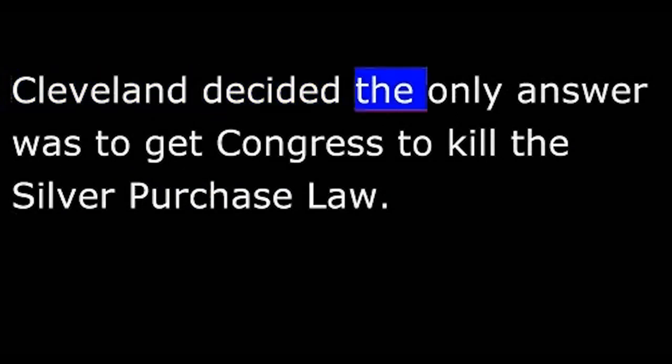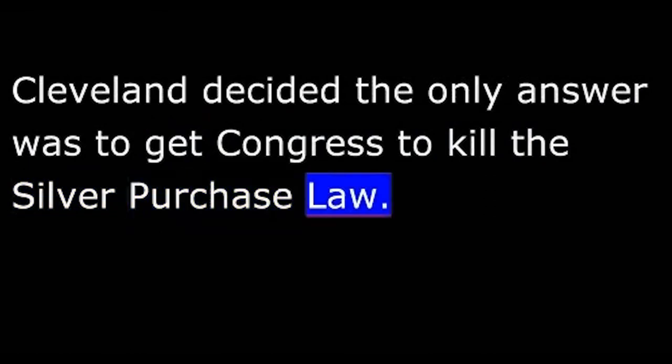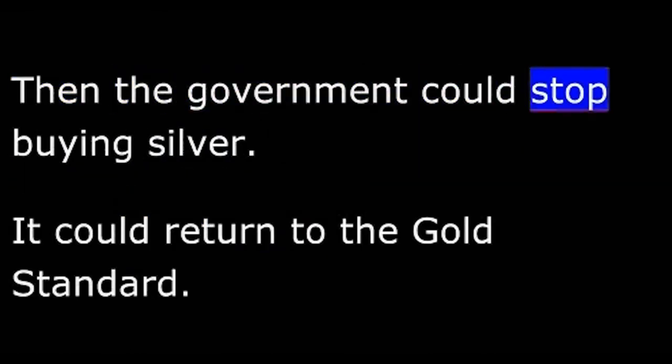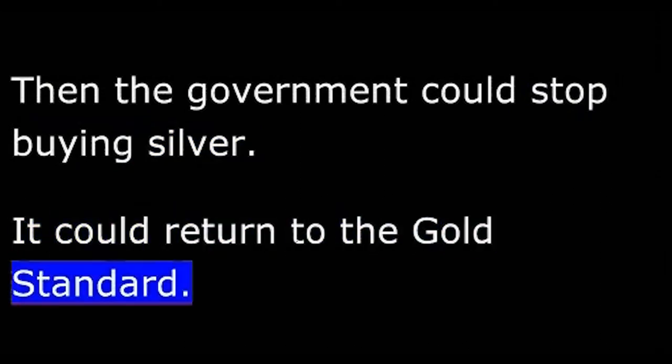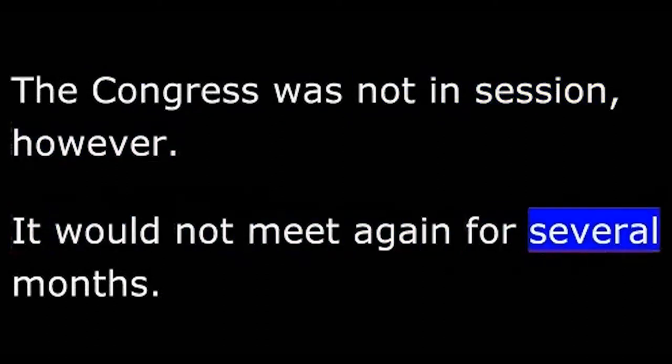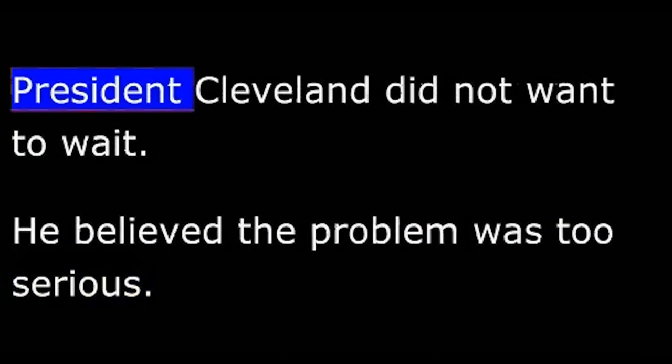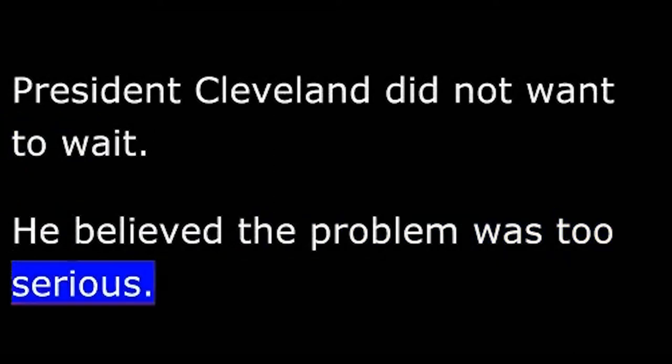Cleveland decided the only answer was to get Congress to kill the silver purchase law. Then the government could stop buying silver. It could return to the gold standard. The Congress was not in session, however. It would not meet again for several months. President Cleveland did not want to wait. He believed the problem was too serious, so he called a special session of Congress.